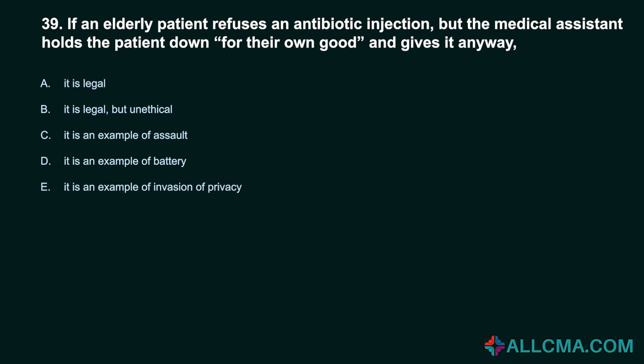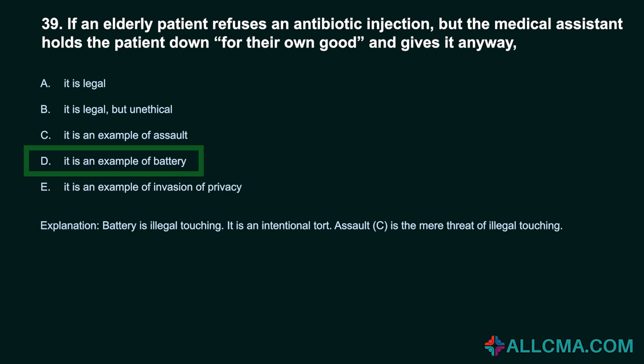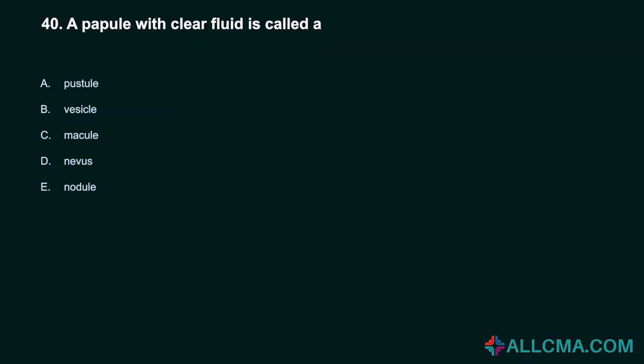Question 39: If an elderly patient refuses an antibiotic injection but the medical assistant holds the patient down for their own good and gives it anyway: A. It is legal. B. It is legal but unethical. C. It is an example of assault. D. It is an example of battery. E. It is an example of invasion of privacy. Correct answer: D. It is an example of battery. Battery is illegal touching and is an intentional tort. Assault is the mere threat of illegal touching.